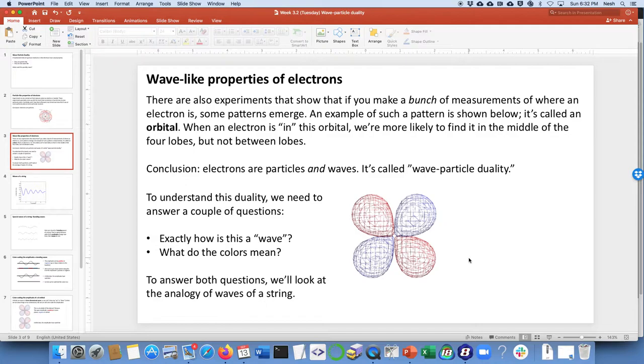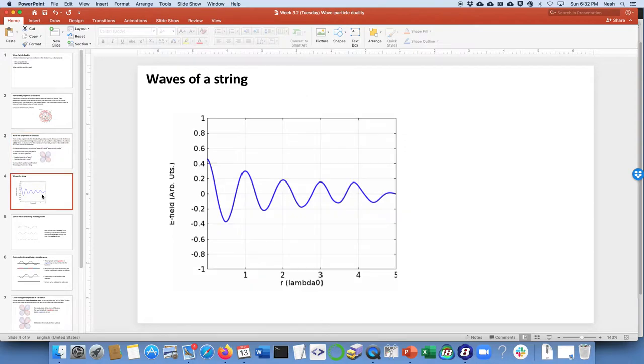To understand that duality, we need to answer a couple of questions. One is exactly how is this a wave? Because it doesn't look like a wave at the moment to me. And what do those colors mean? To answer both questions, we're going to just dive into an analogy, which is the analogy of waves on a string.